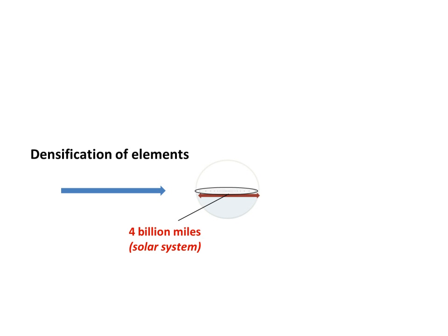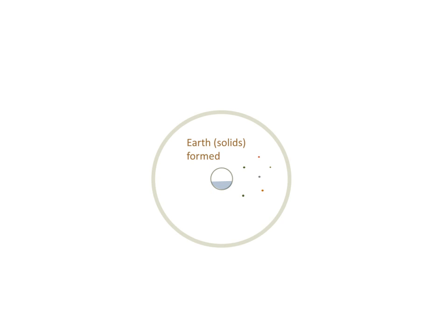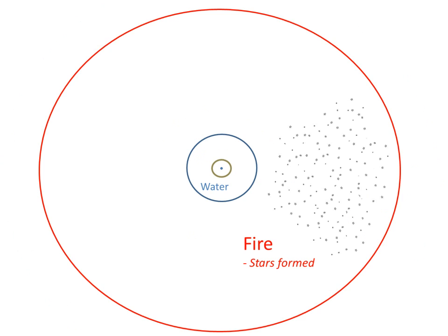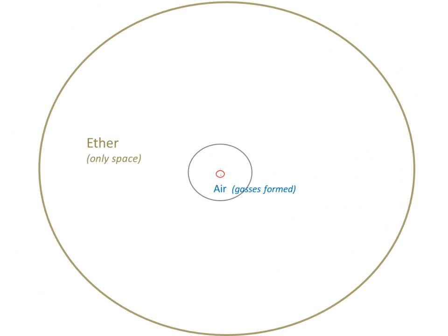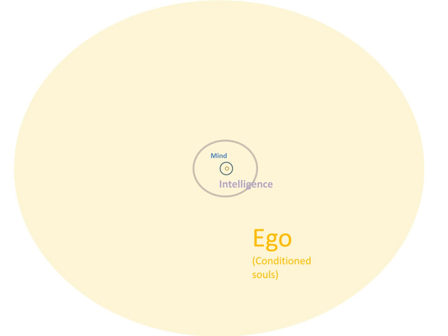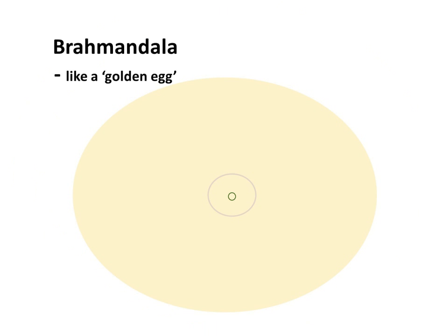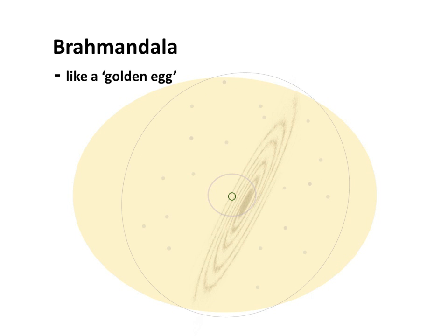Let's look at the coverings. We have that 4 billion miles of the solar system, but there are coverings. As we get further away — or closer, from outside — we get the densification of elements, and as we get away from the inner coverings of the universe we're going backwards in time. The coverings are layers of earth, subtle earth, water, fire, air, ether — and each covering is 10 times thicker than the previous. After ether comes mind, intelligence, and on the outer layer of the universe, ego. Looking at the whole thing including the covering of ego and all the other elements, it is shaped like a golden egg. Compared to what modern astronomers would recognize, this Milky Way galaxy according to modern estimations would actually be roughly the same size — interestingly enough.